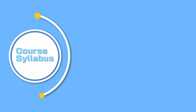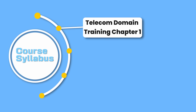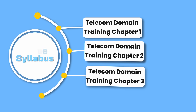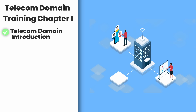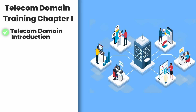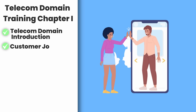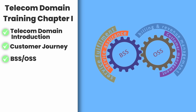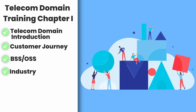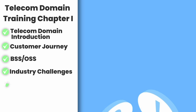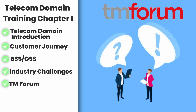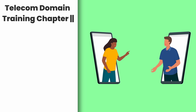As part of the course overview, we have divided it into three subcategories: Telecom Overview 1, 2, and 3. In Telecom Overview 1, we will start with the basic telecom introduction, talk about how telecom came into existence, cover a typical customer journey, go through the BSS and OSS domain, discuss various industry challenges currently faced by telco companies, and end with an introduction to TM Forum.